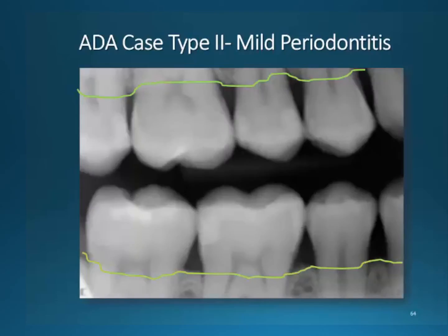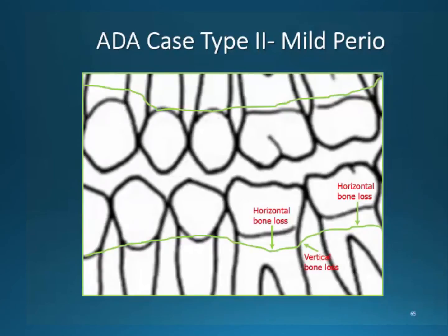This image illustrates mild periodontal disease as referred to as ADA class type 2. Take a moment to study these changes. This slide demonstrates how we will chart periodontal bone loss in our clinical chart. Note that we have identified horizontal and vertical bone loss changes. Bone loss must be carefully documented for comparison between dental visits. When illustrated it is easy to read — these drawings should coincide with the numerical probing depths that you chart.